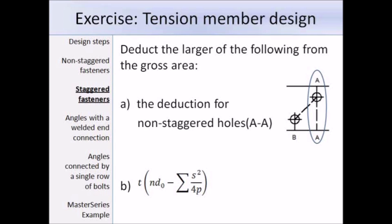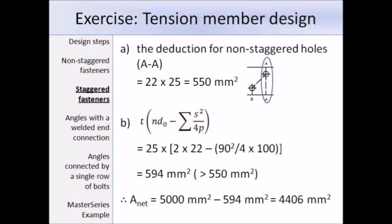For option one, the deduction for non-staggered holes is the hole diameter times the plate thickness: 22 × 25 = 550mm². For option two, we apply the zig-zag equation with T = 25mm, P = 100mm, S = 90mm, N = 2 holes, and D0 = 22mm, giving a deduction of 594mm². Since 594mm² is the larger of the two, we deduct that from the gross area, giving a net area of 5000 − 594 = 4406mm².